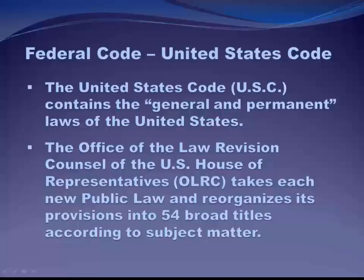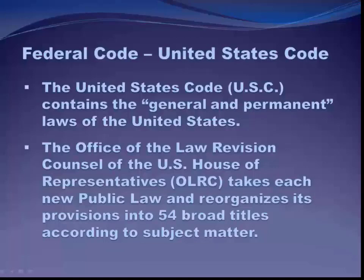Codes can be either official, printed by the government, or unofficial, like the United States Code Annotated published by West. A code can also be either unannotated or annotated. Annotated codes are definitely a better place to start your research because they provide editorial enhancements such as notes to court decisions involving the statute, better indexing, finding tools like a popular name table, and cross-references to secondary sources. Print annotated codes are also updated more frequently than official government print codes.